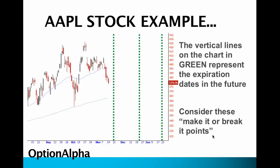Another Apple stock example — what I did here is take a chart of Apple just recently, cut it off, and then drew all these vertical green lines. These green lines represent the expiration dates for Apple contracts in the future, and they can be varying dates for expiration. This green line right here where my cursor is is the November expiration, the next one is December, and the next one is January.